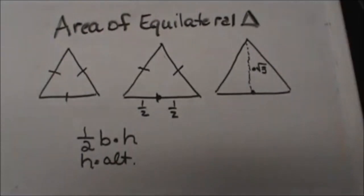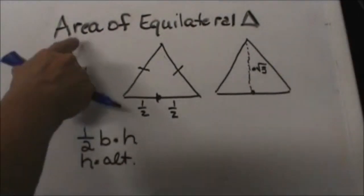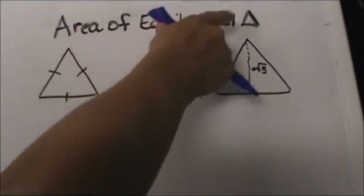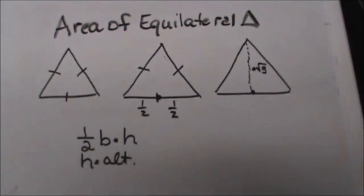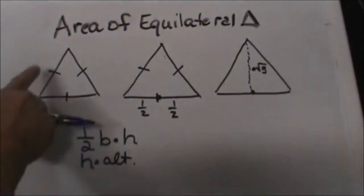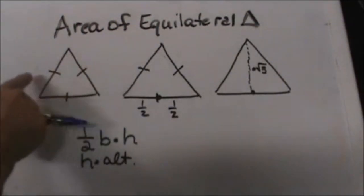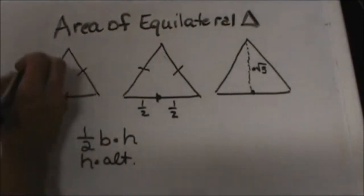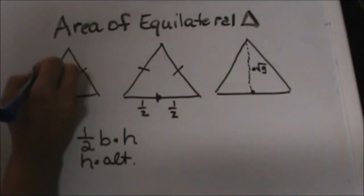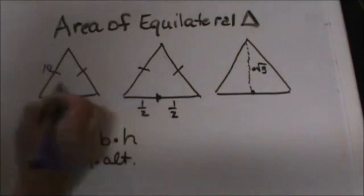Hi, welcome to Moo Moo Math. Today we're going to look at how to find the area of an equilateral triangle. First we need to know what an equilateral triangle is — it's a triangle with three equal sides. So we're going to give each side the value of 10.